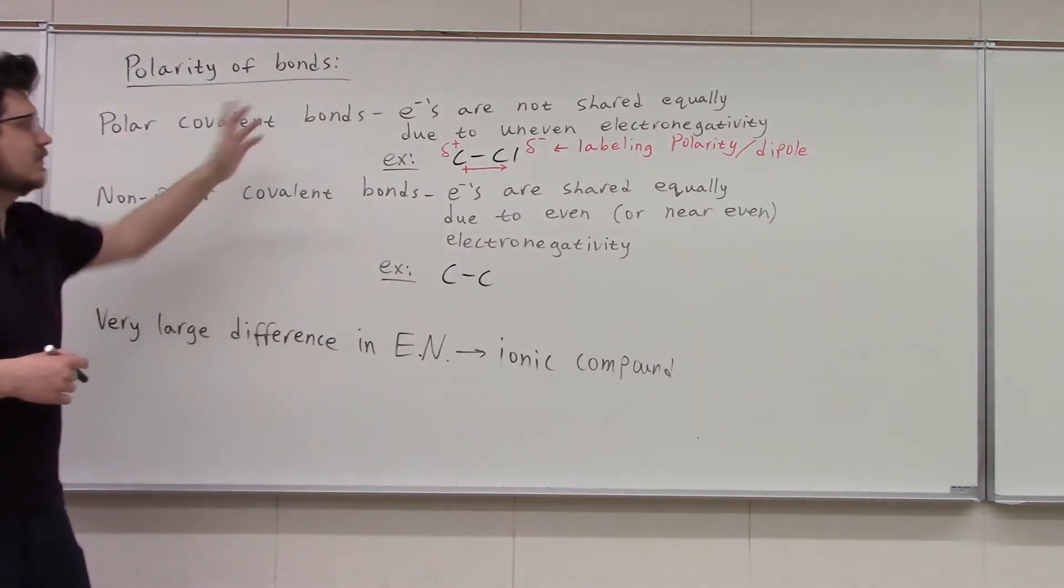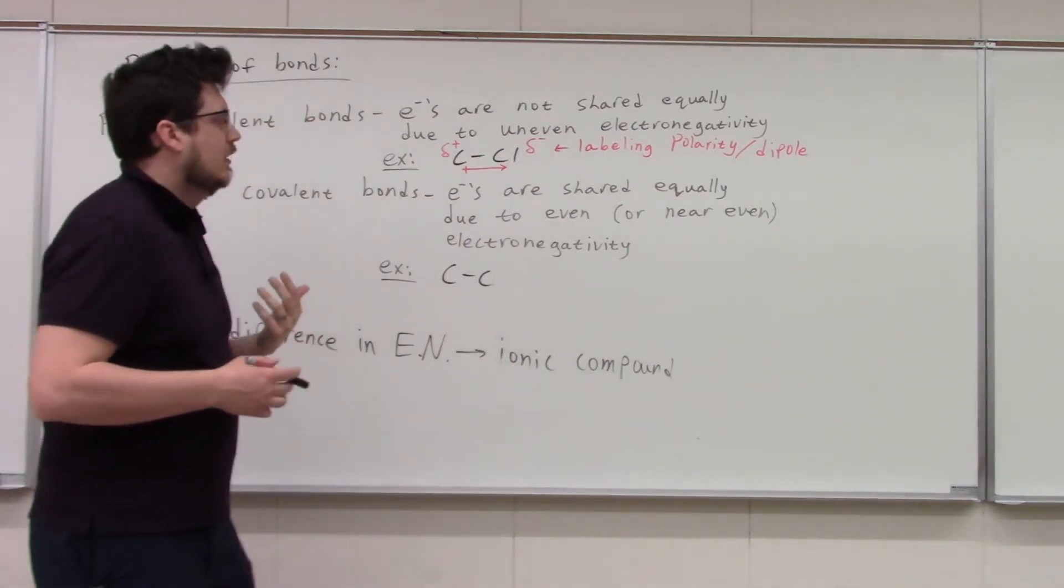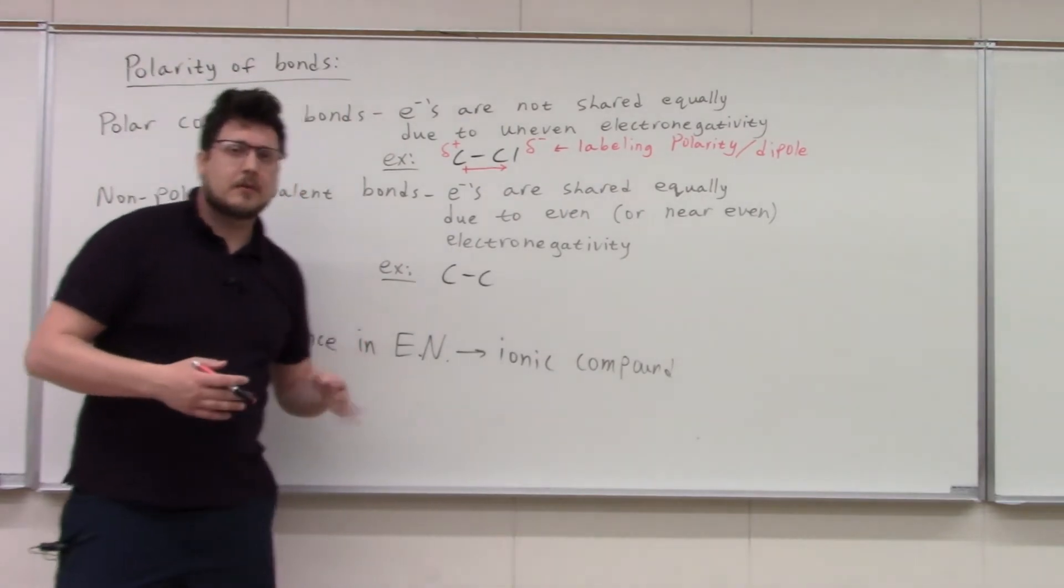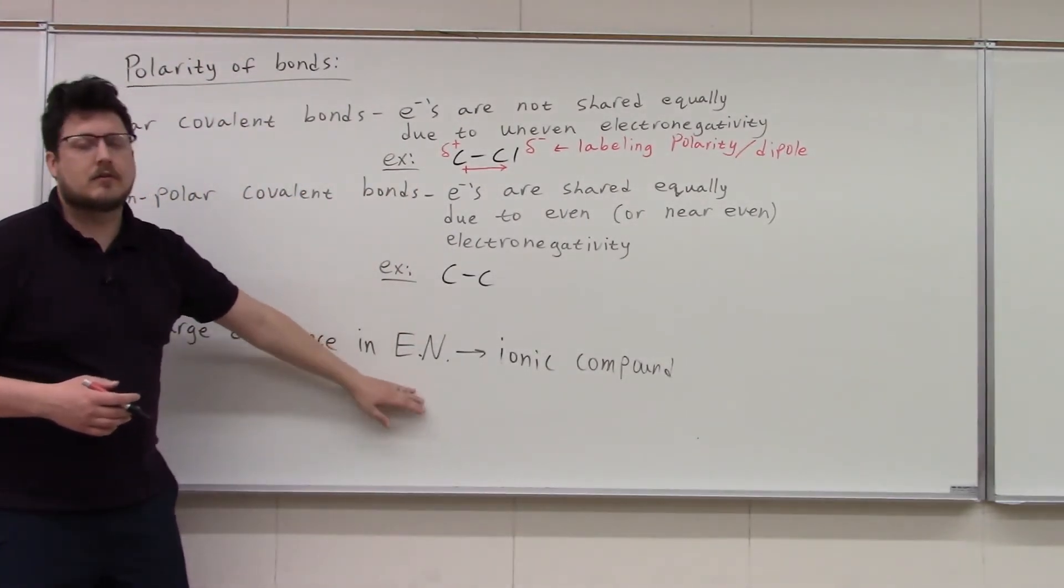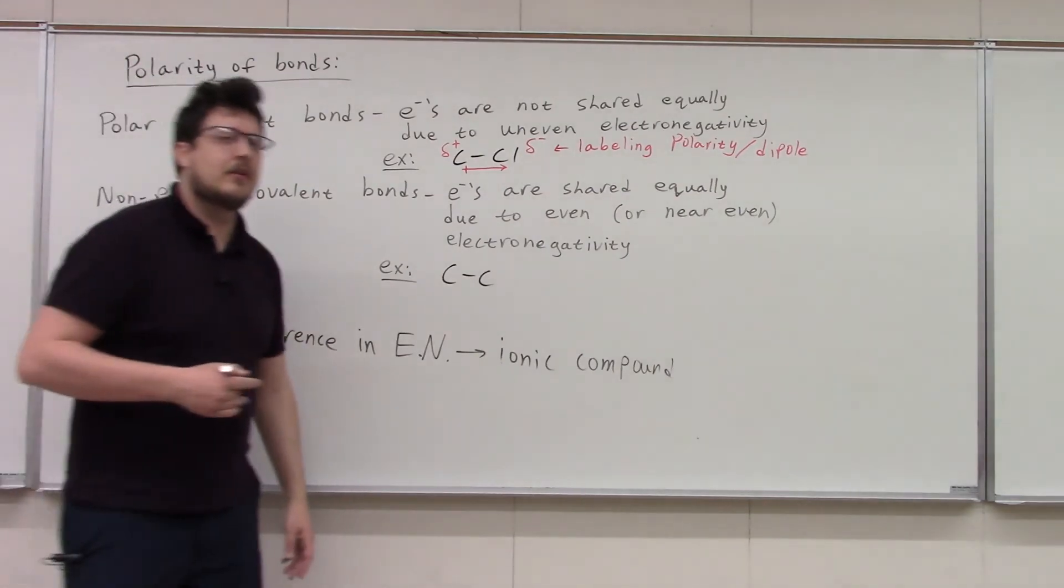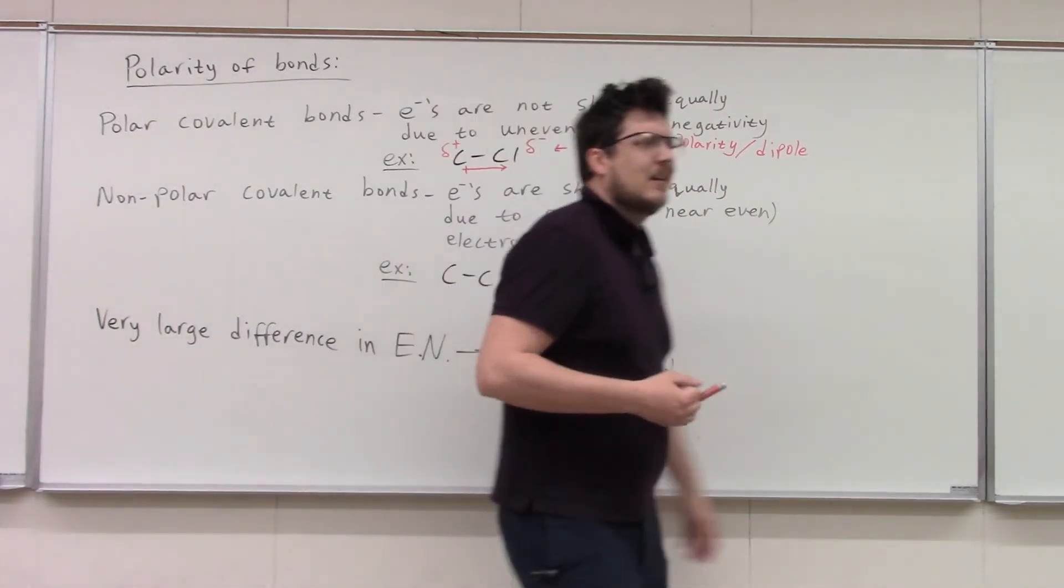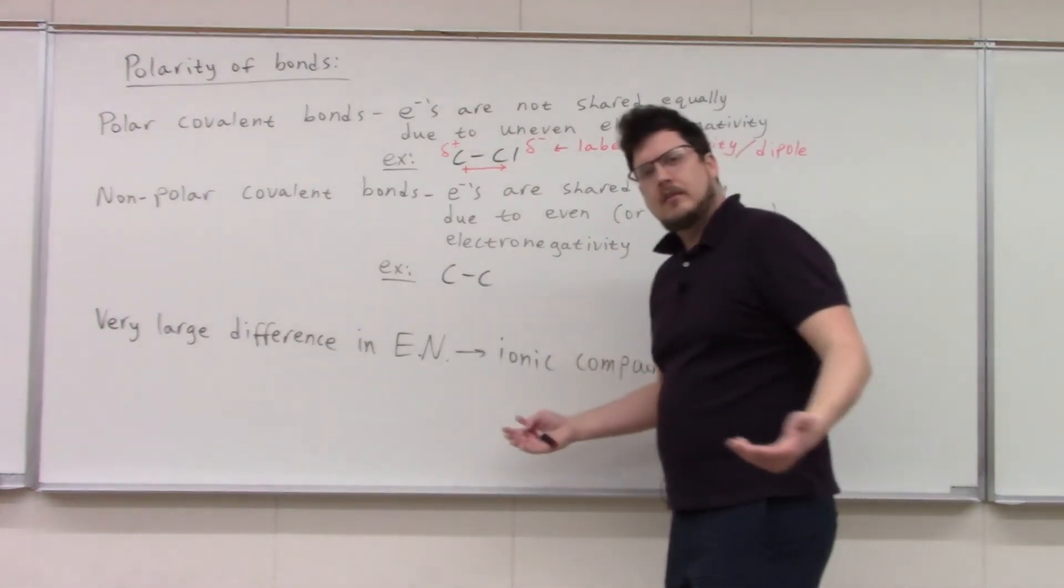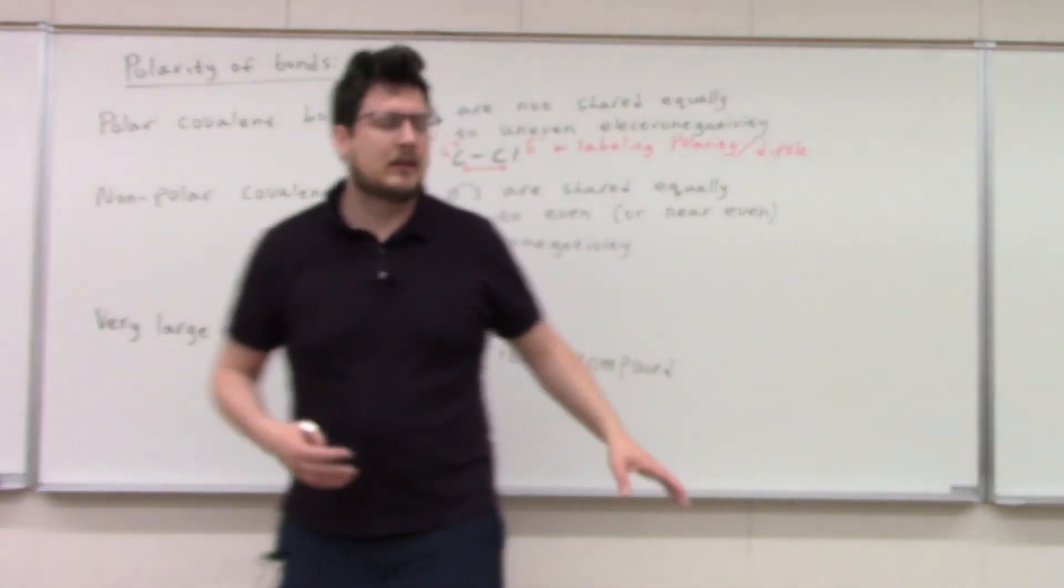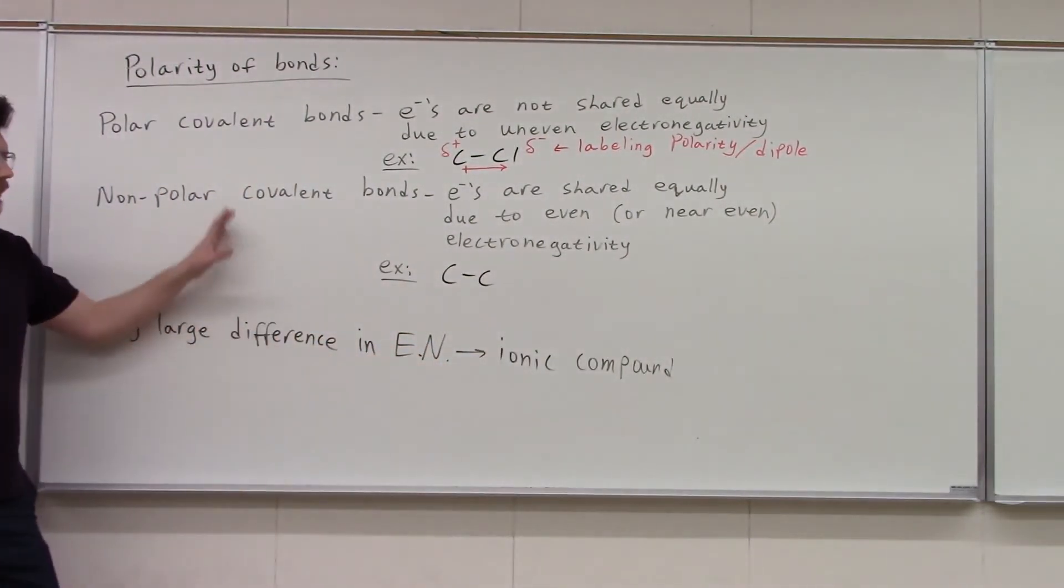And we're going to use this idea in chapter nine to talk about polarity of molecules. But for now, it's just, is a bond polar or non-polar or is it ionic? Do you get a really big difference in your electronegativity? And so that's like, I think your book says a difference of more than 2.5. And typically, when you look at your periodic table, you can see, oh, it's going to be a metal and a non-metal.